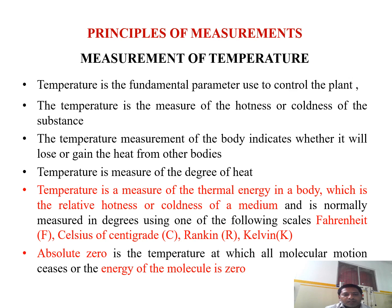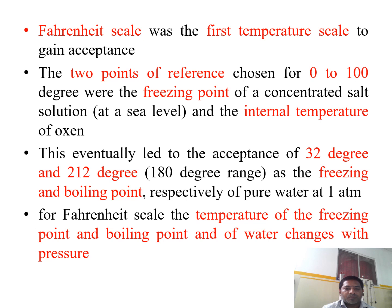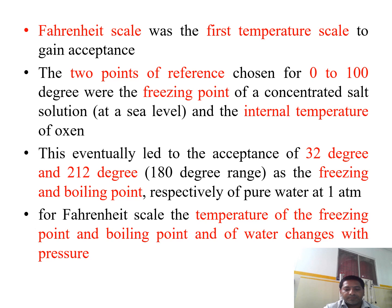The temperature scales are Fahrenheit, Celsius, Rankine, and Kelvin. Absolute zero is the temperature at which all the energy of the molecule is zero. The Fahrenheit scale was the first temperature scale to gain acceptance. The two reference points were the freezing point of concentrated salt solutions and the internal temperature of oxygen, which eventually led to the acceptance of 32 degrees and 212 degrees — a range of 180 degrees — as the freezing and boiling points of pure water at 1 atmospheric pressure.